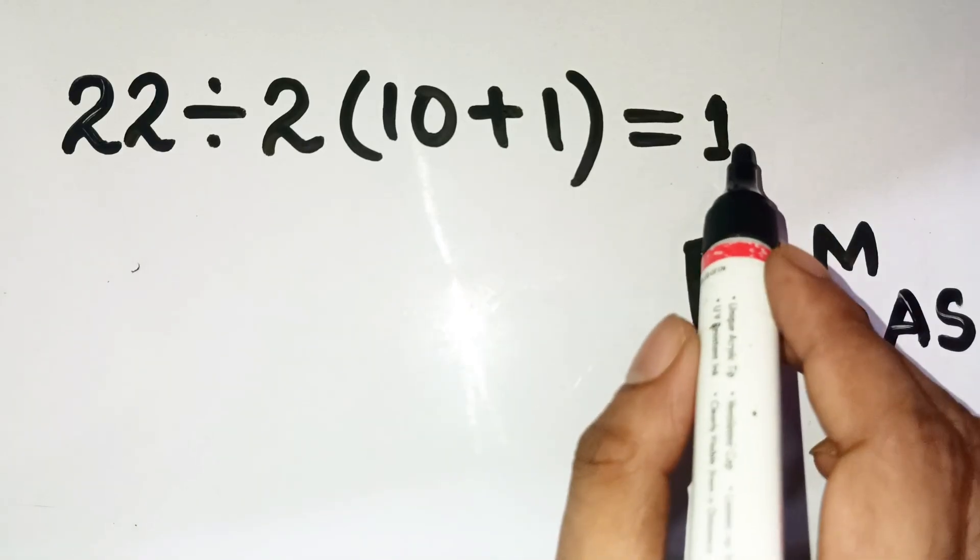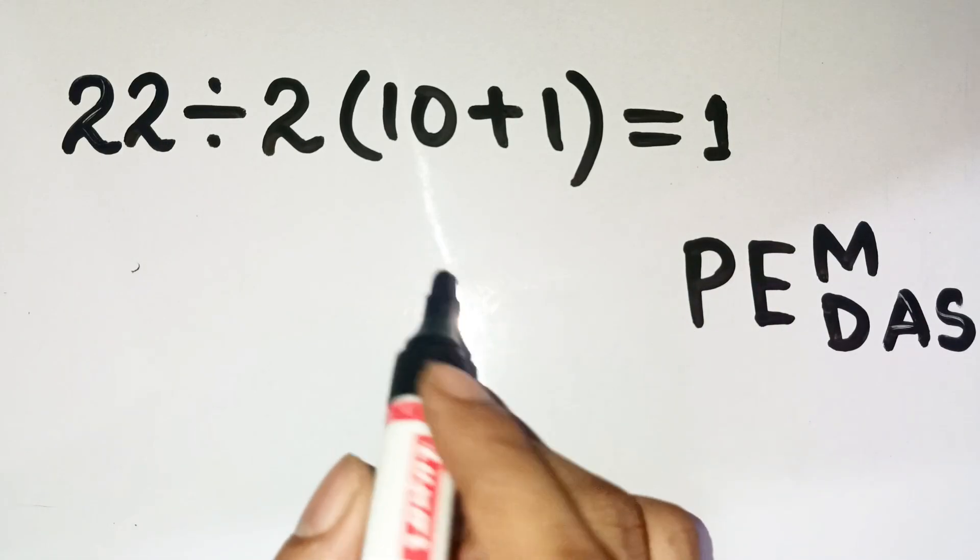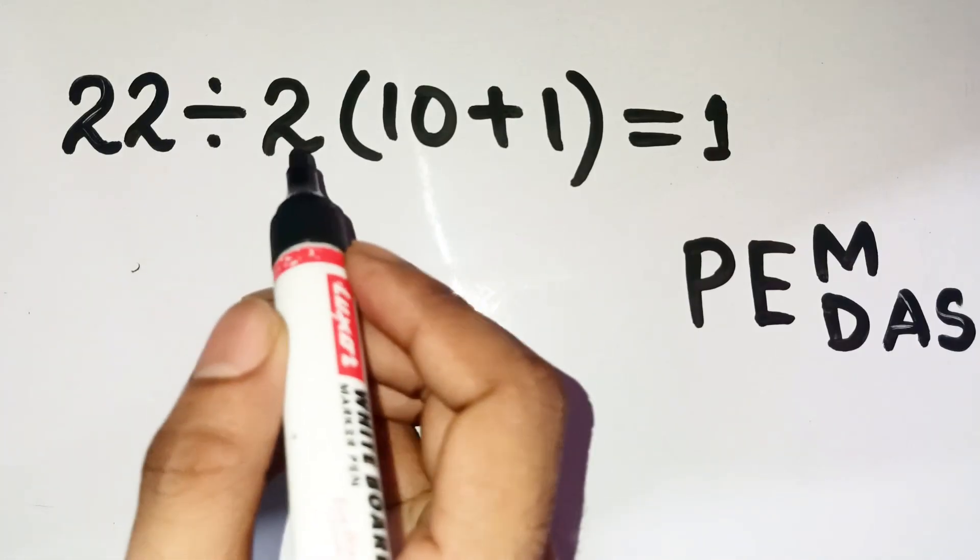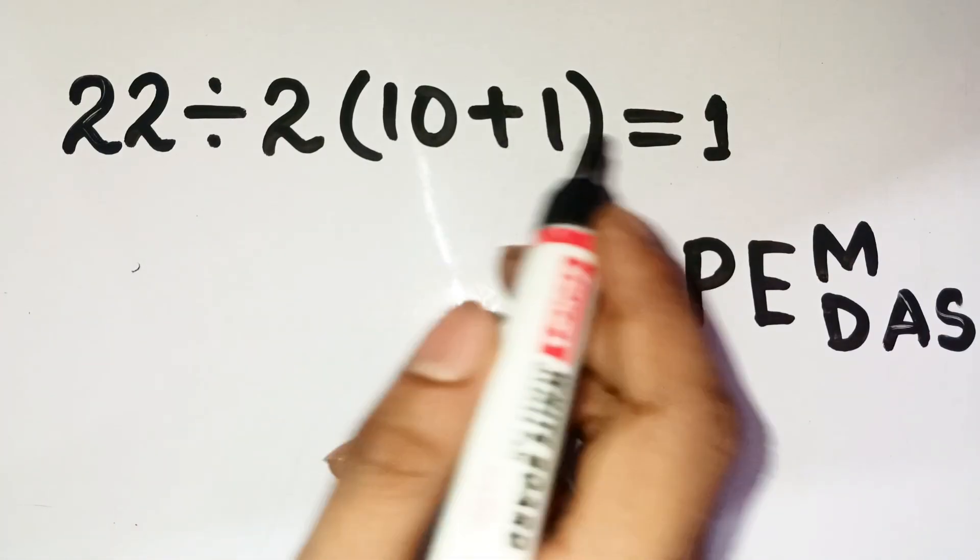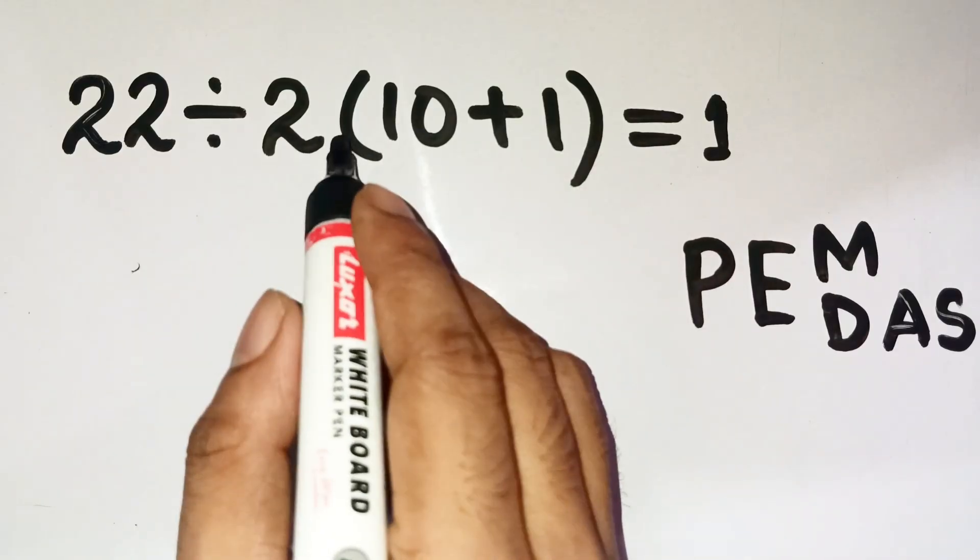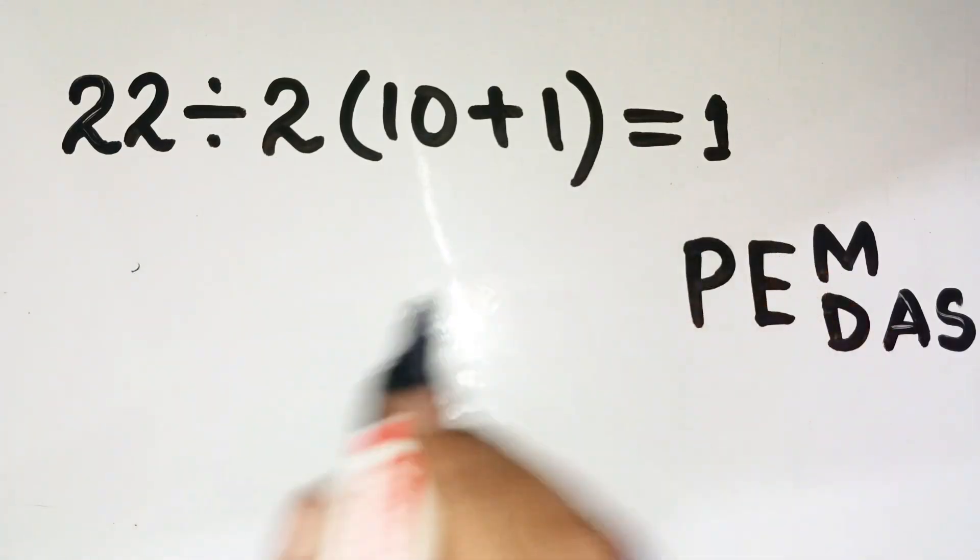Almost everyone jumps straight to 1, but that's a huge mistake. You probably saw 22 divided by 2, then multiplied by the parenthesis, 10 plus 1 equals 11, times 2 gives 22, then 22 divided by 22 equals 1.